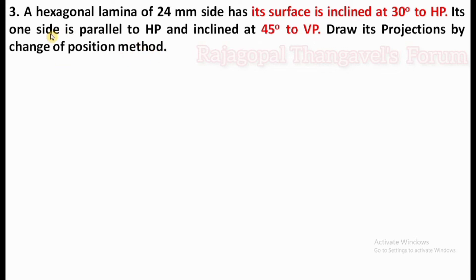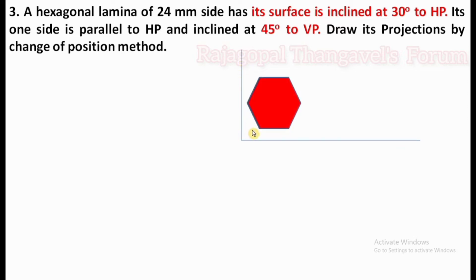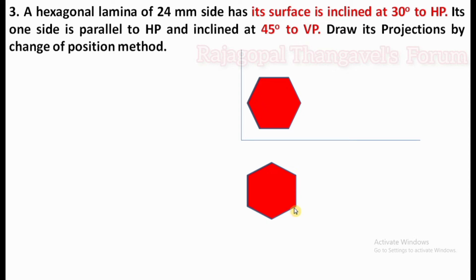First of all, one side of the plane surface must be parallel to HP. We can draw a horizontal and vertical plane by means of a line and make sure that one side of the hexagon is parallel to the HP horizontal plane. As per first angle projection, rotate this horizontal plane in clockwise direction by 90 degrees, so that the top view position of the hexagonal surface will appear like this. This is the plane surface side which is parallel to HP; after rotation of 90 degrees it becomes perpendicular to XY in the top view.